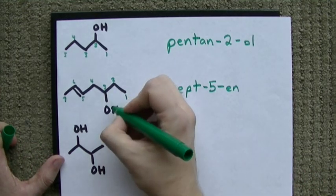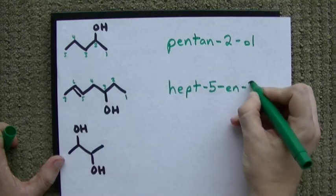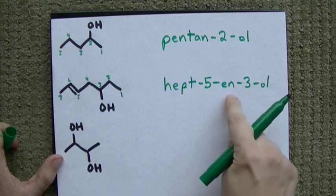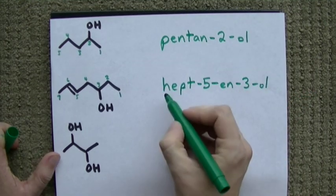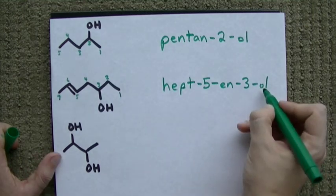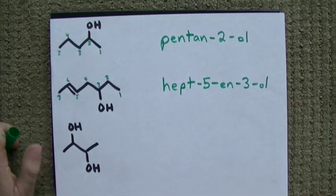And, we have an alcohol, or OH group, on carbon three. All. Hept, five, ene, three, all. Means, we have a seven carbon chain with a double bond starting at carbon five. And, an OH group on carbon three.